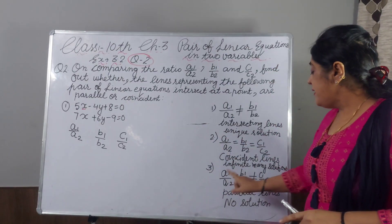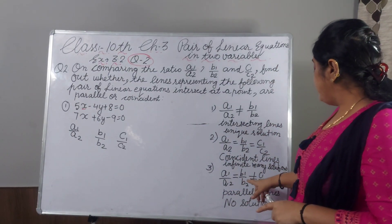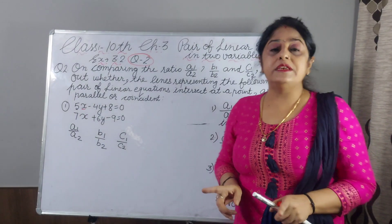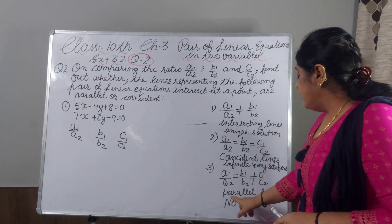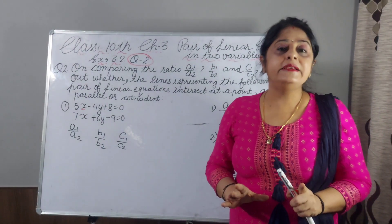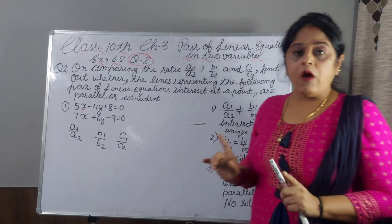Now, A1 by A2 equal to B1 by B2 and not equal to C1 by C2, then graphically they are parallel lines and they have no solution.